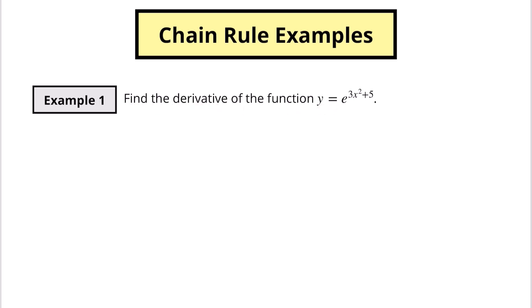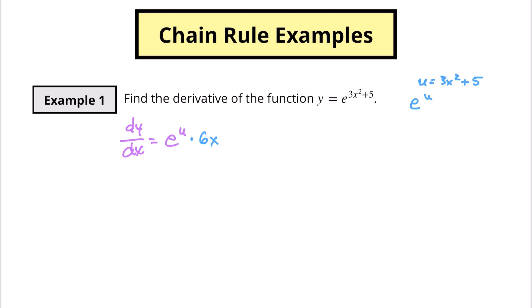We're going to start by finding the derivative of y equals e to the 3x squared plus 5. We're going to find dy/dx by finding the derivative of the outside piece. I'm going to let u equal 3x squared plus 5, so the function becomes e to the u. This is going inside u, so this is the outside piece. The derivative of e to the u is just e to the u. Now for the derivative of the inside piece: the derivative of 3x squared plus 5 is 6x.